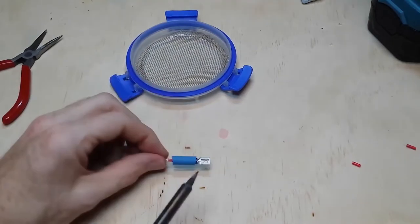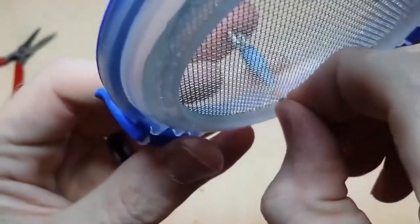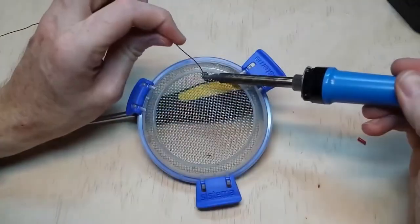And I poke the end through, twist the frayed wires together, and finally solder it onto the mesh. It's got a good hold on the mesh as you can see.